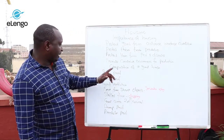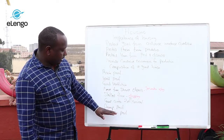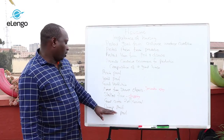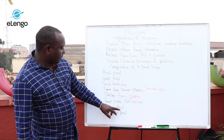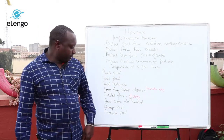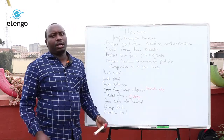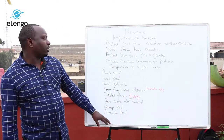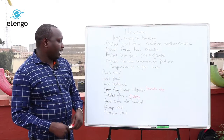Another factor to consider is damp-proofing — the goat house should not be damp and should always be dry to avoid infections and pneumonia. The other factor is predator-proofing: no predator should be able to enter the goat house. All these factors should be considered when setting up a goat house.